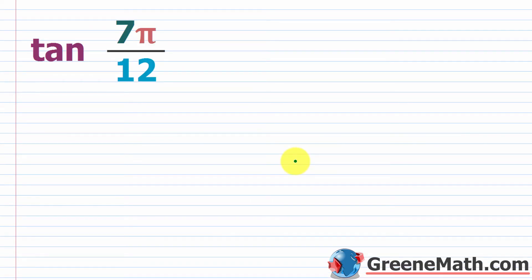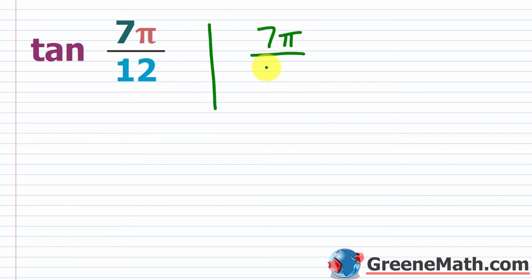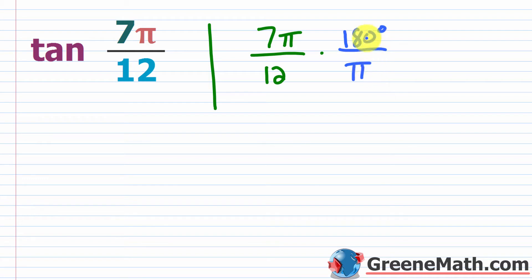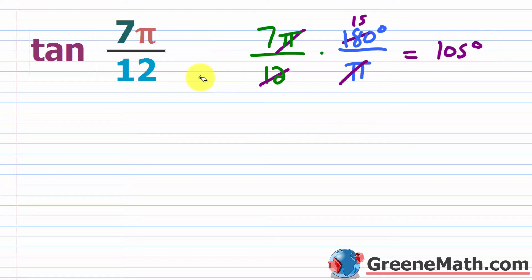Now let's look at a similar problem: finding the tangent of 7π/12. If you're good at working with fractions you can work in radians, but I'm going to convert to degrees because it's easier. So 7π/12 times 180 degrees over π: the π's cancel, and 180 divided by 12 is 15. So 15 times 7 is 105 degrees. This gives us the tangent of 105 degrees.